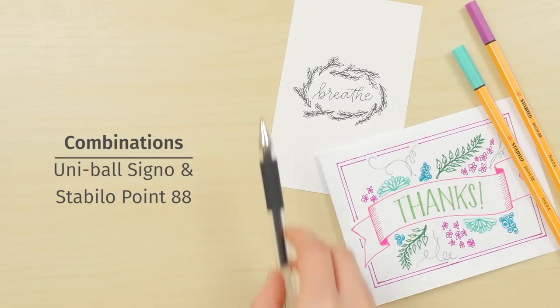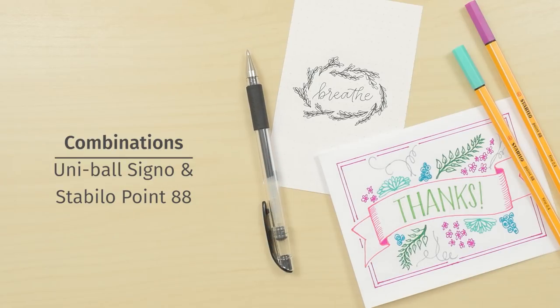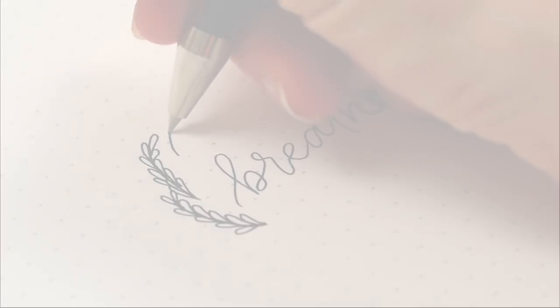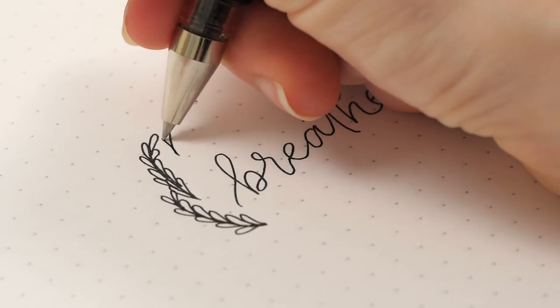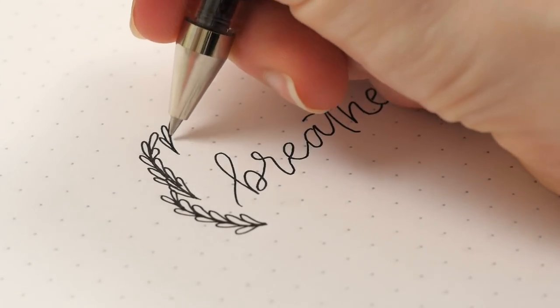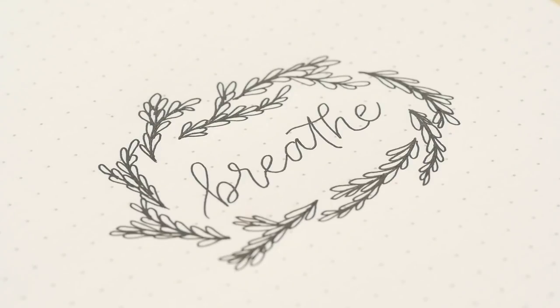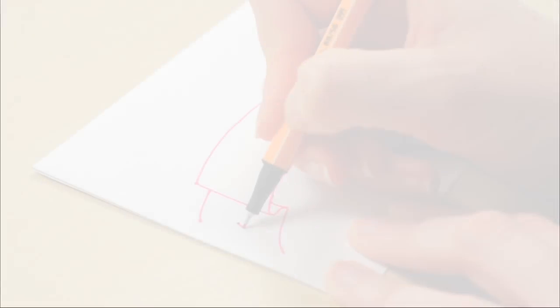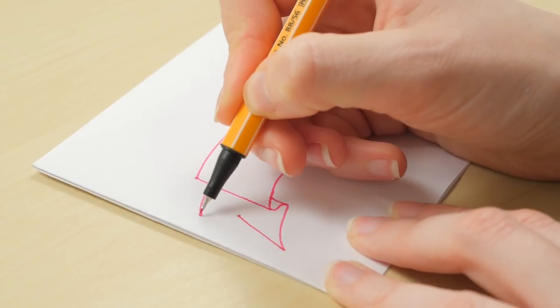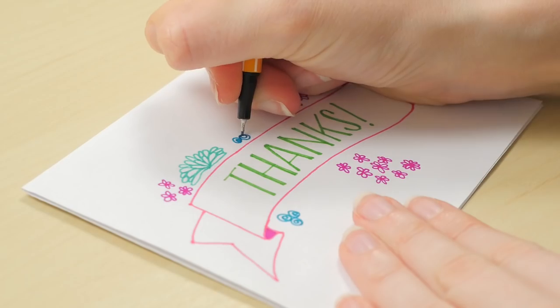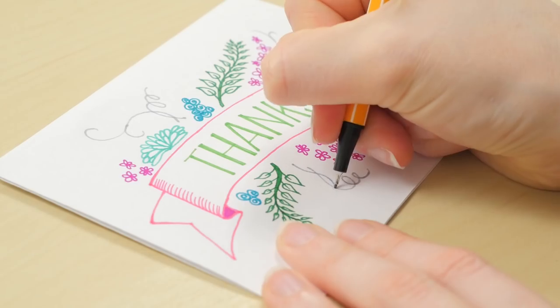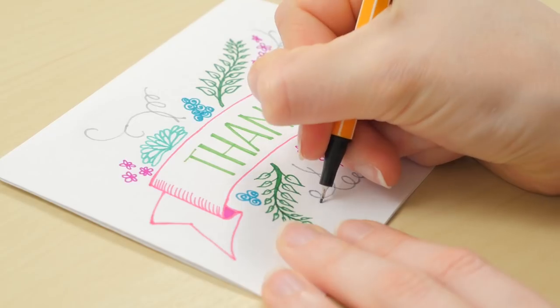Combine any of these embellishments to create stunning hand-lettered pieces. Here, we use leaves to make a frame around our lettering. In this example, we use a banner, florals, flourishes, and a frame.